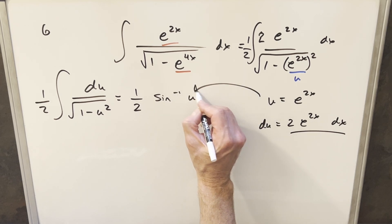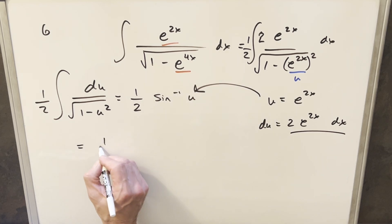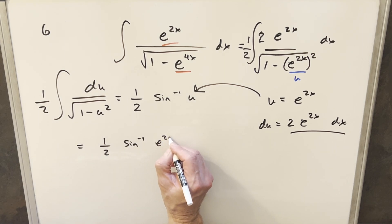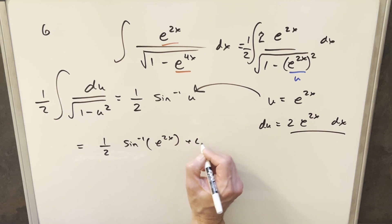And we'll just back substitute it in order to finish it off. So for my final solution, we just have 1 half arc sine of e to the 2x plus c. And that's it.